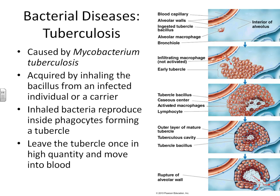Our next bacterial disease of the respiratory tract is tuberculosis, caused by Mycobacterium tuberculosis. This is a complex disease because the bacteria can exist in people in different states. Some people that inhale the mycobacterium simply become a carrier — their immune system keeps the infection under control so they never become infected themselves, but carriers can transmit the disease to other people.